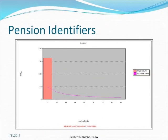This is an example of data not conforming to Binford's law. The pink line indicates the expected digital frequencies of the first digit, and the red bar indicates the actual frequencies of pension identifiers. Pension identifiers are assigned numbers, and most of them start with number 1, so they do not conform to Binford's law.